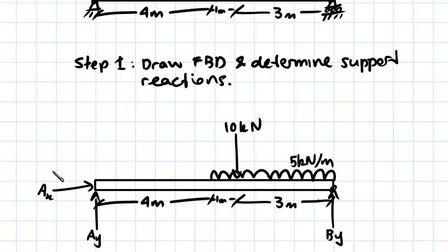The first support was a pin joint, so we have a reaction in the x direction and a reaction in the y direction. The second support was a roller joint, so we will only have a reaction in the y direction.